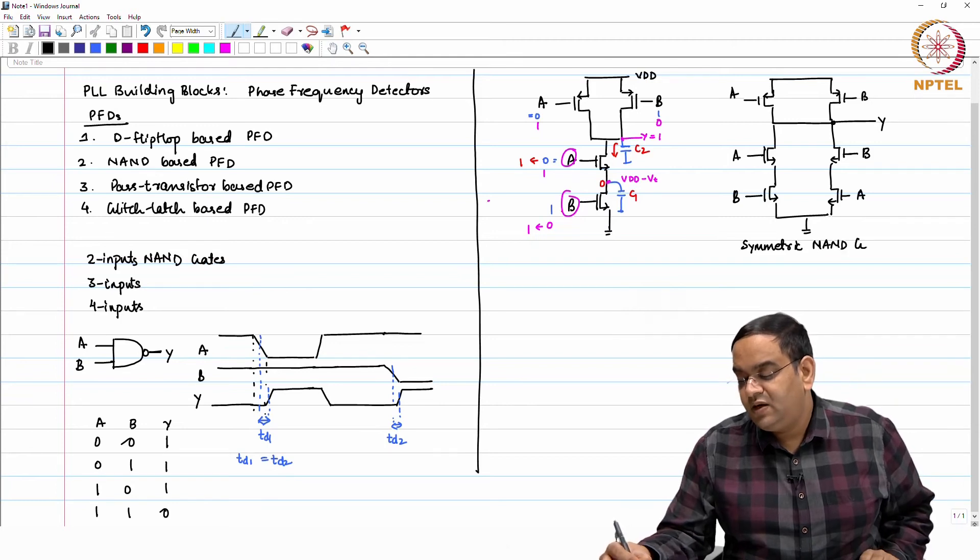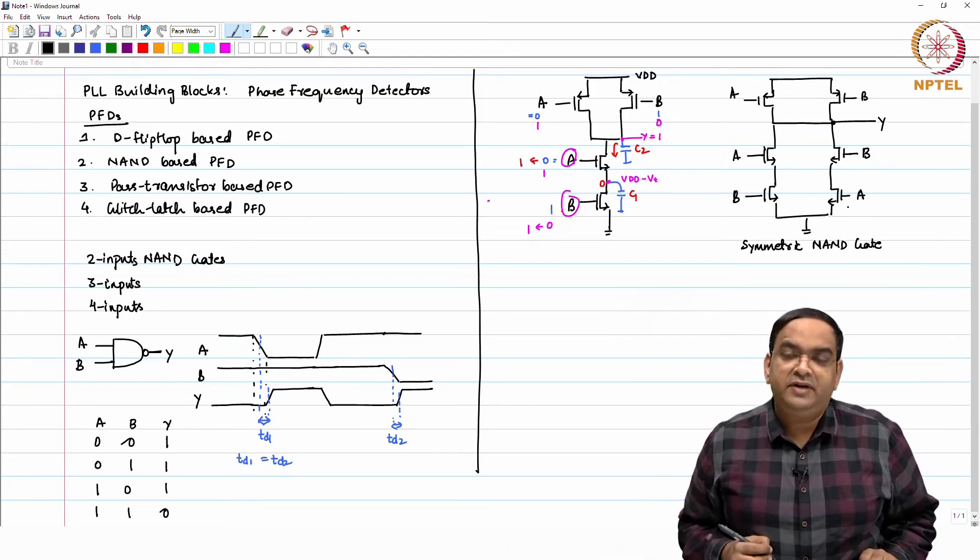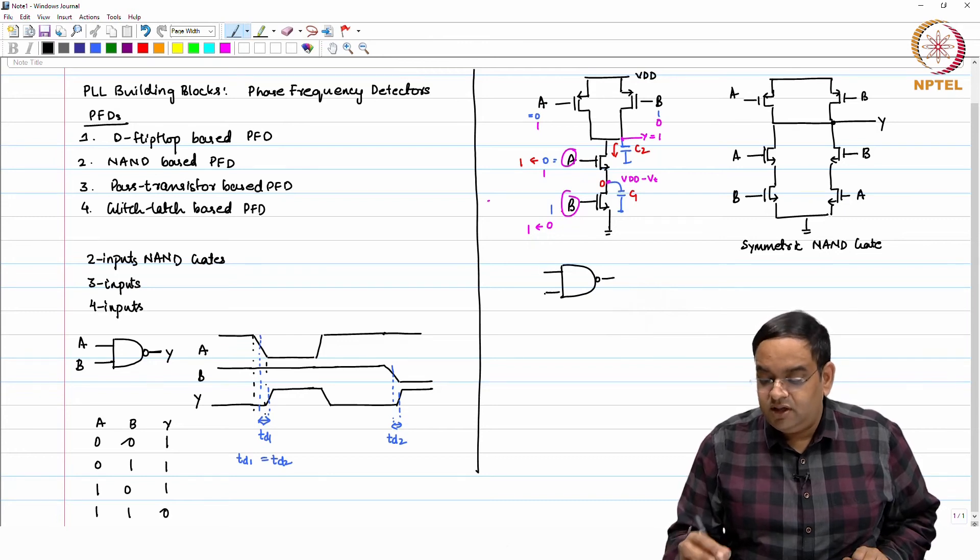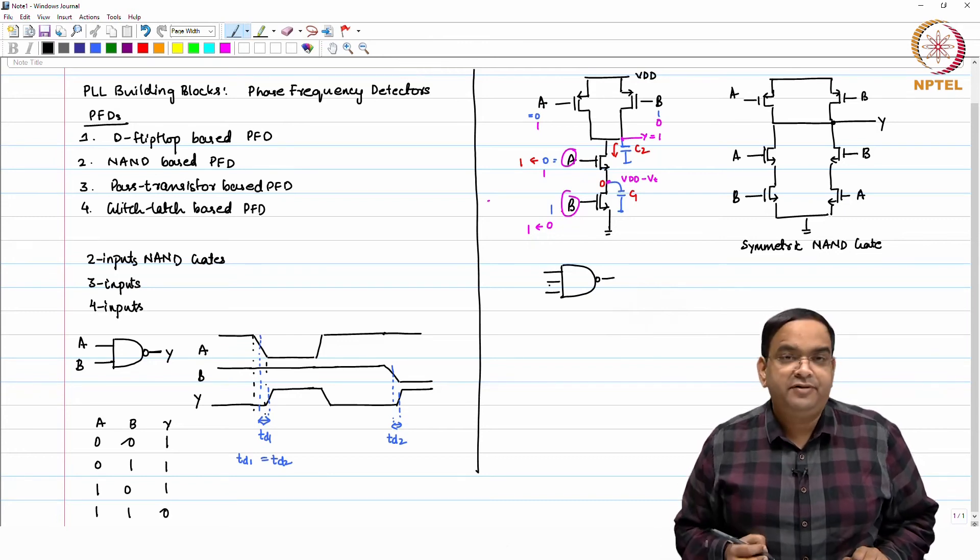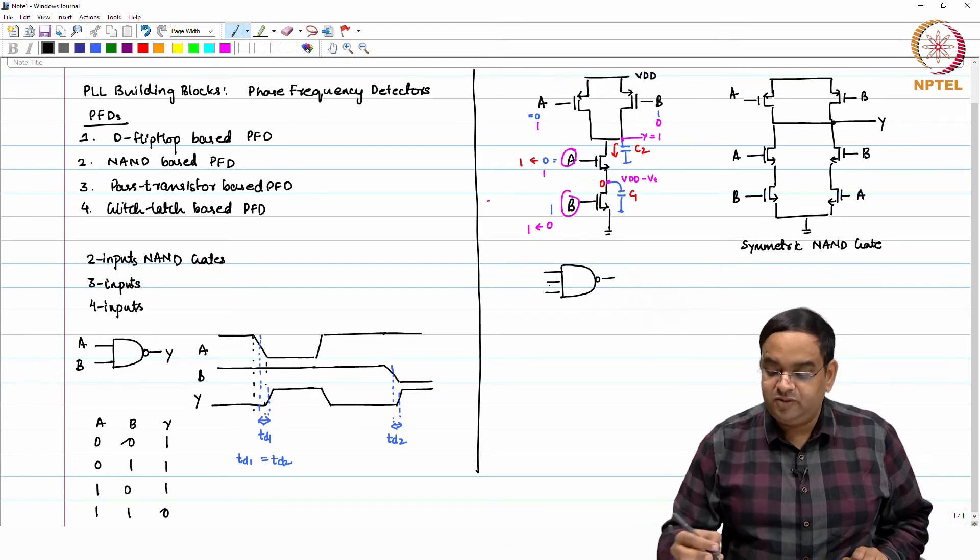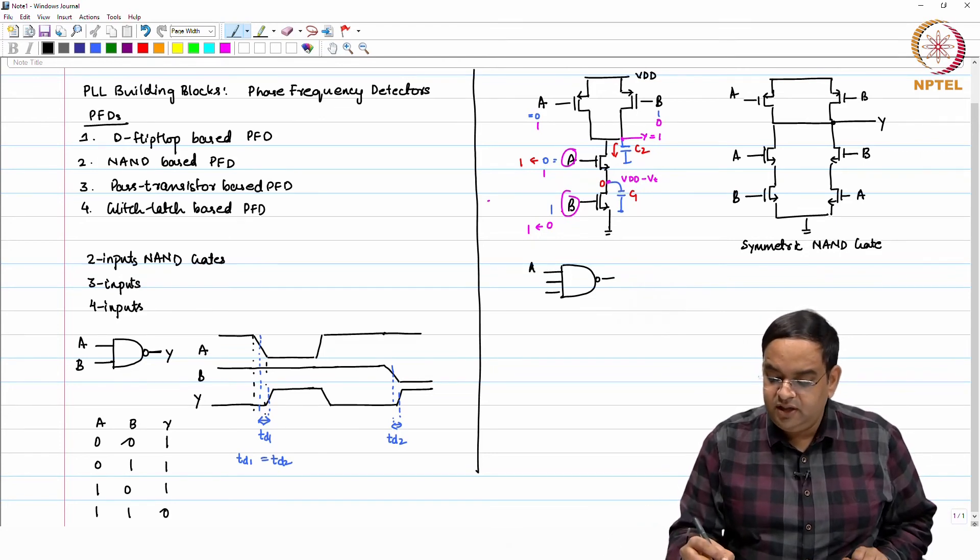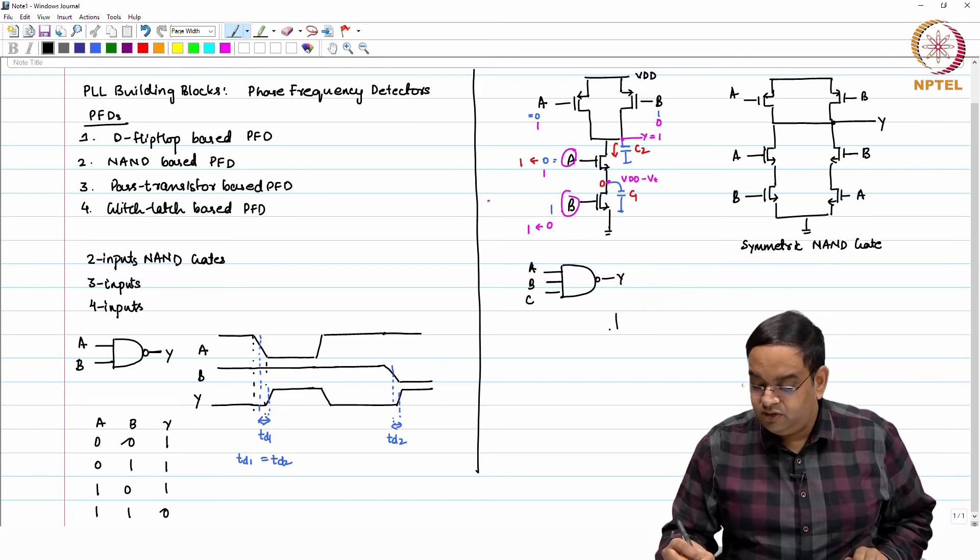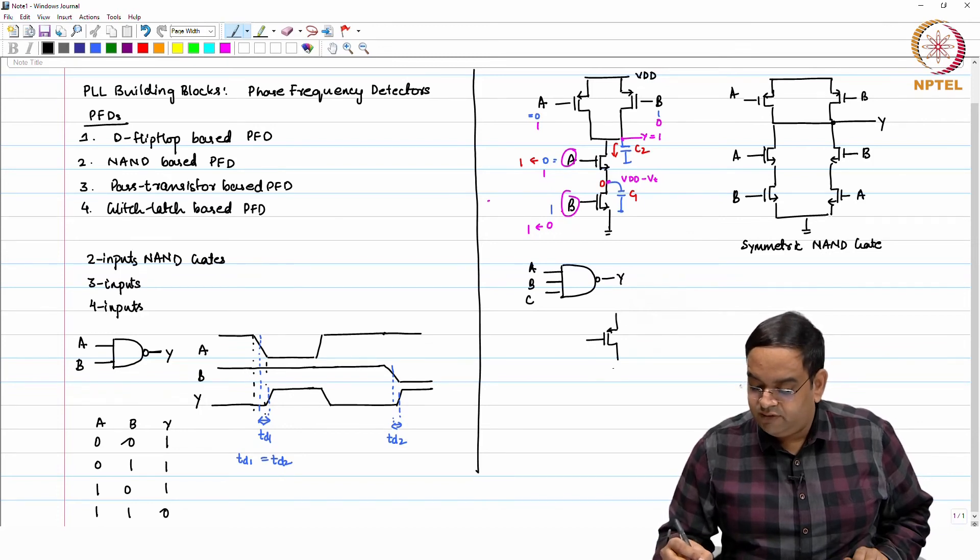It is possible to do in case when you have two input NAND gate. For three input NAND gate it becomes a little difficult, because at some point of time you cannot have all the possible combinations. With two it is easy. Here I have A, B, C and Y.